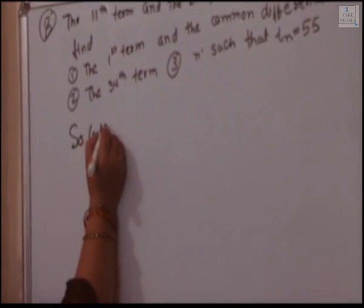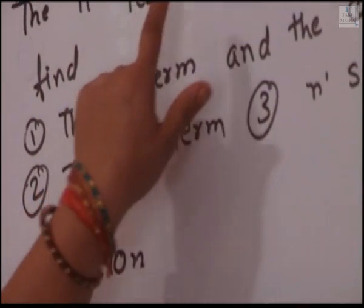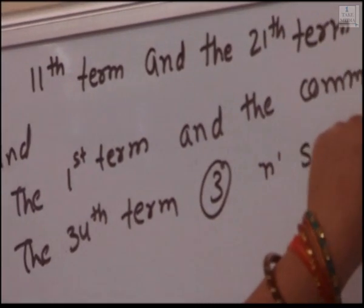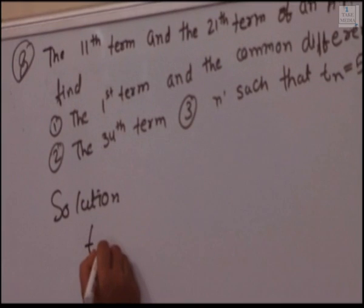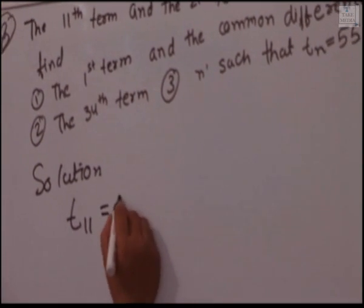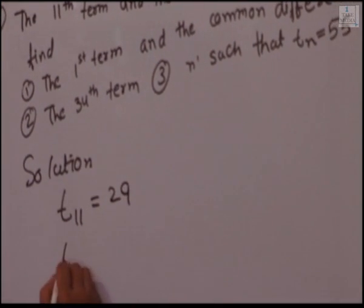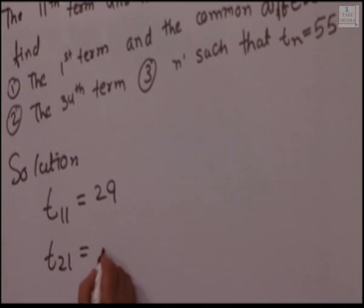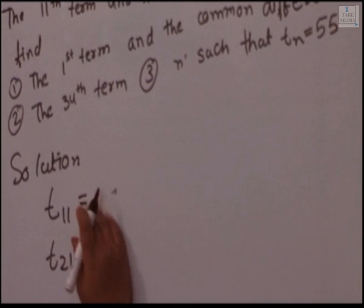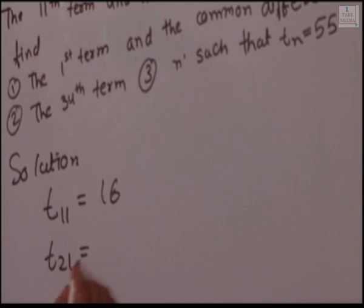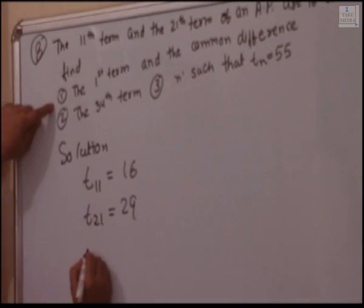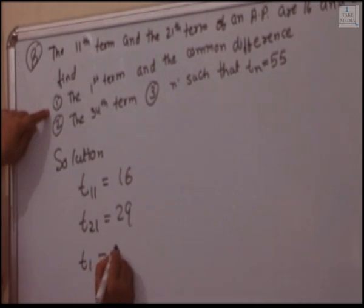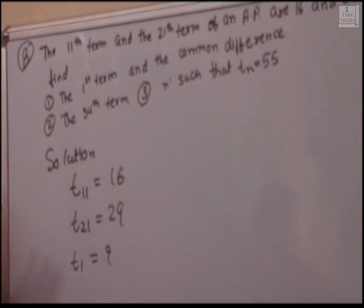First we will read the question. The 11th term and the 21st term of an AP are given as 16 and 29 respectively. So T11 equal to 16 and T21 equal to 29 is given. We have to calculate T1, the common difference D, and the 34th term.